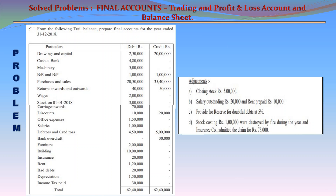Particulars, debit rupees, credit rupees. Drawings: 2,50,000. Capital: 20,00,000. Cash at bank: 4,80,000. Machinery: 5,00,000. Bills receivable and bills payable: 1,00,000 and 1,00,000.